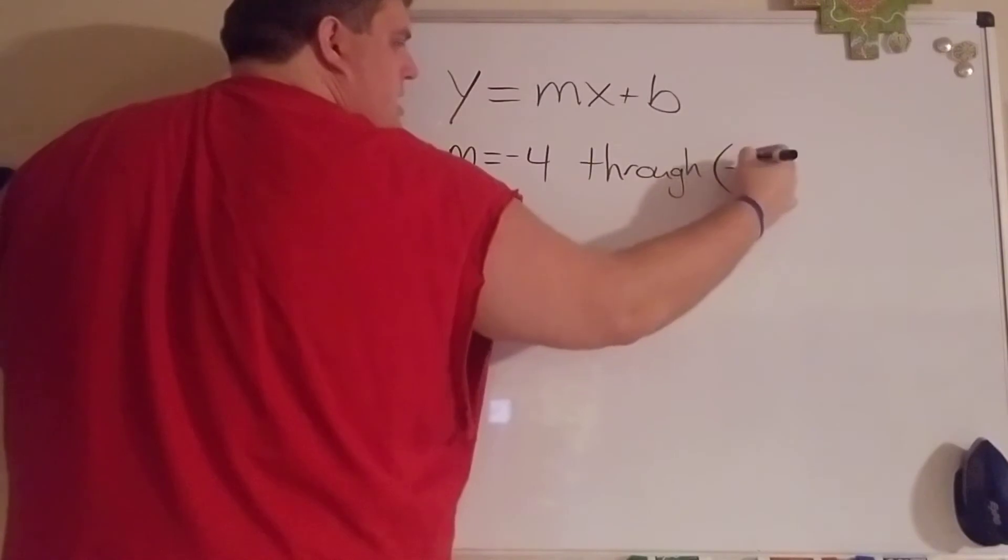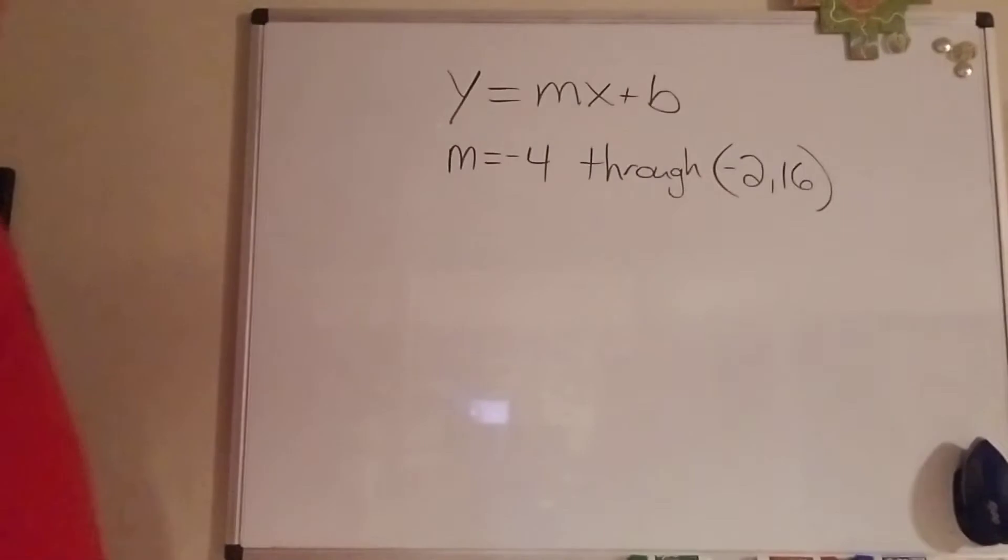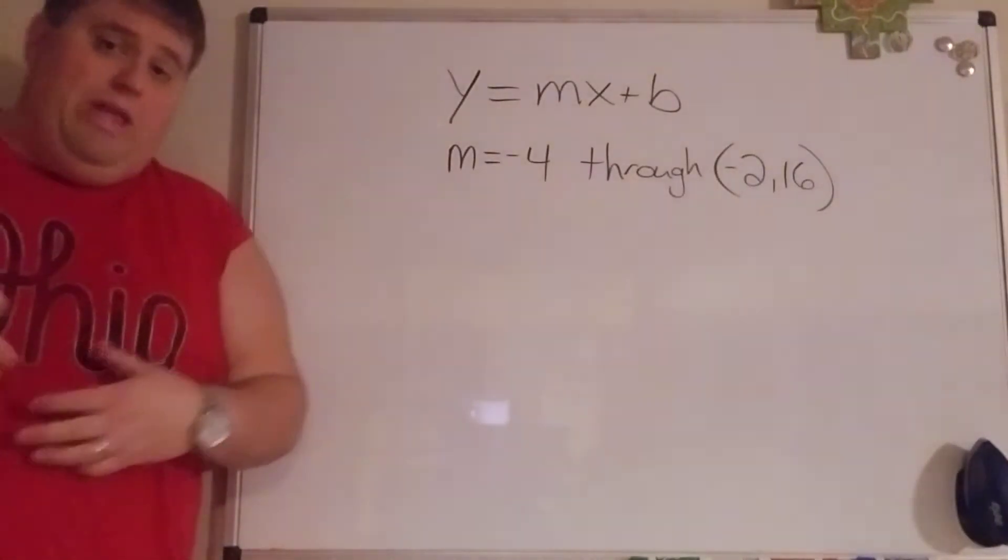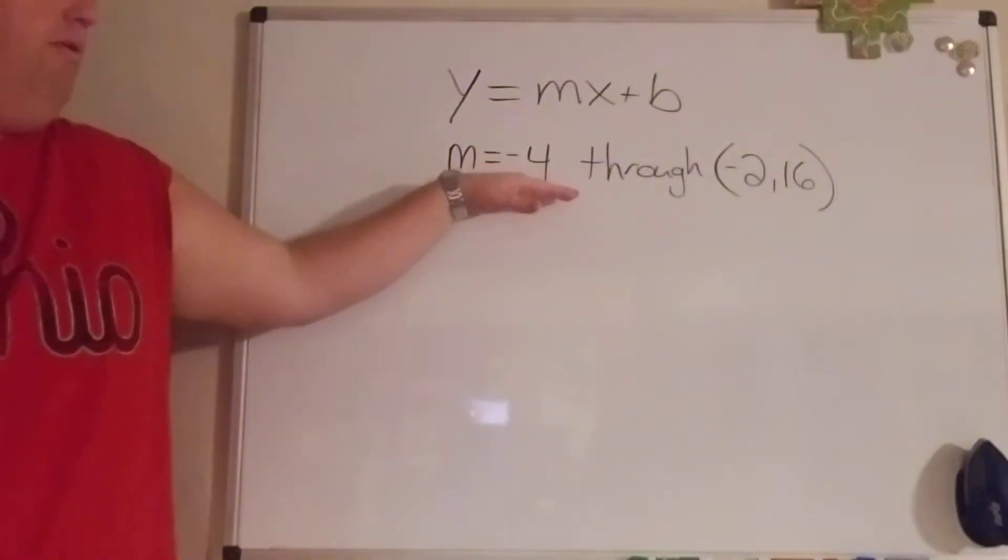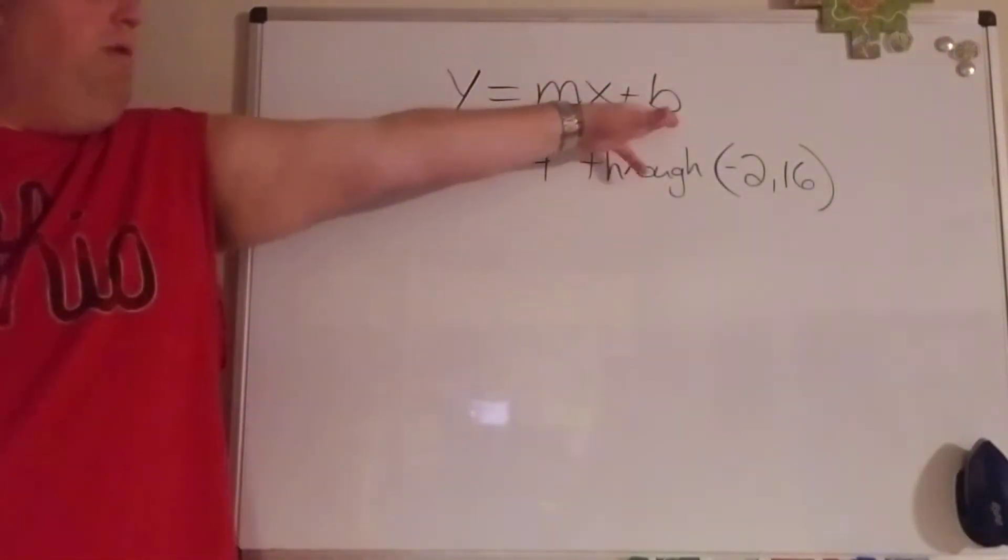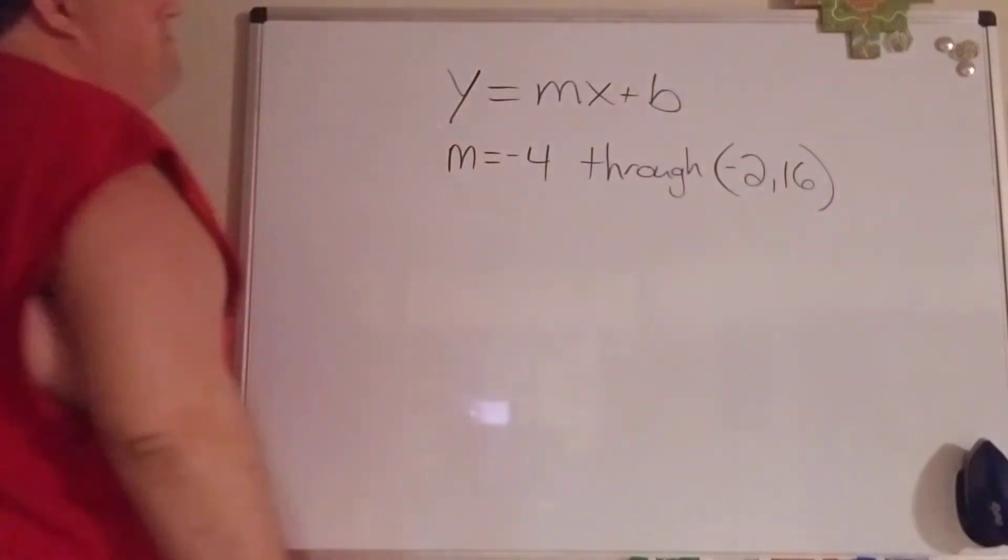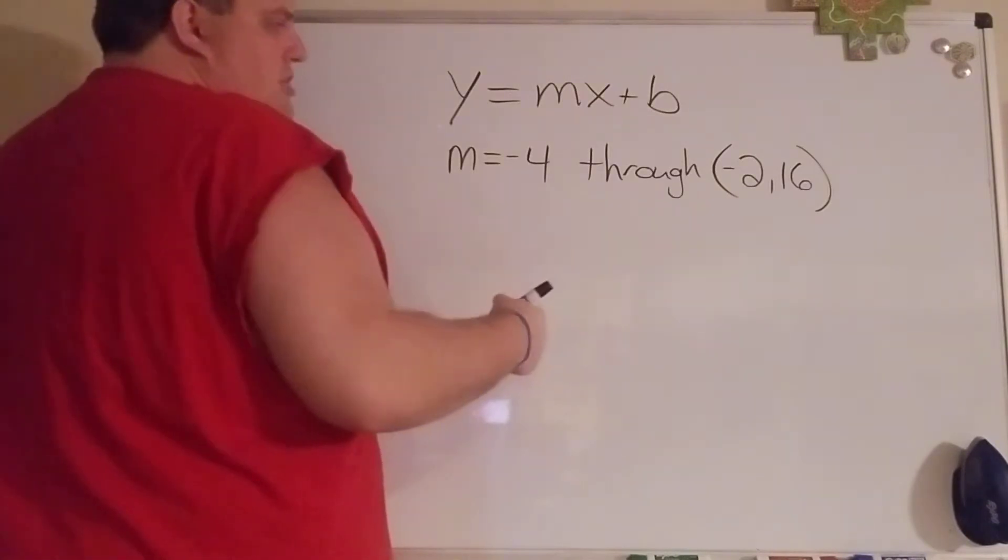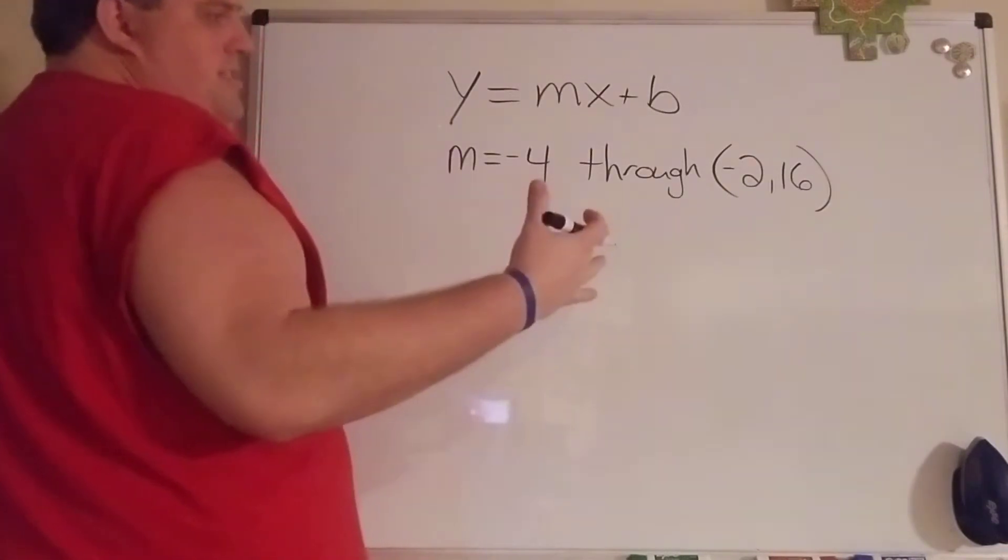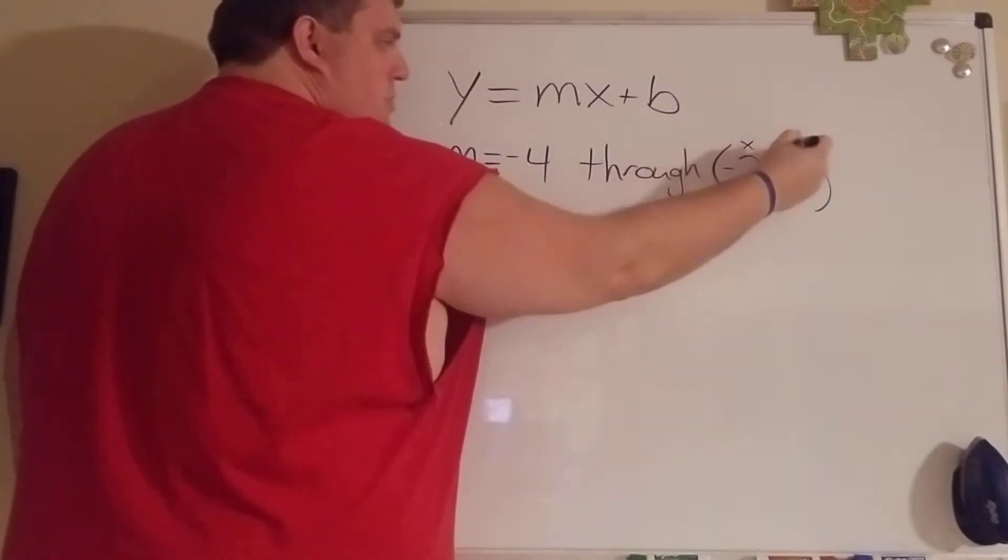We know the slope intercept form is y equals mx plus b. So if I want to write an equation in slope intercept form, I need my slope and I need my y-intercept. If I told you the slope of a line was negative four and it goes through the point negative two, sixteen, we know half of the information that we need here because we know our slope is negative four, but we do not know what our y-intercept is.